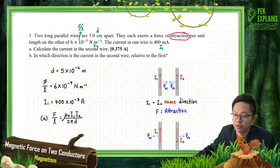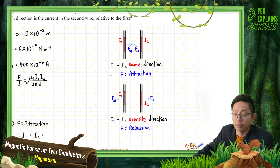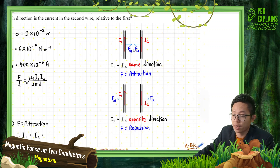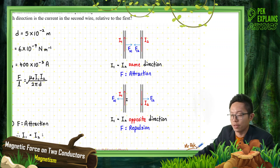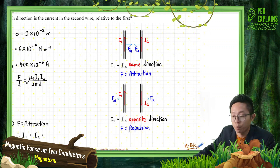Let's recall what we've learned. For two parallel conductors, if the currents I1 and I2 flow in the same direction, the wires attract each other. But if the currents flow in opposite directions — I1 going up and I2 going down, or vice versa — they repel each other.